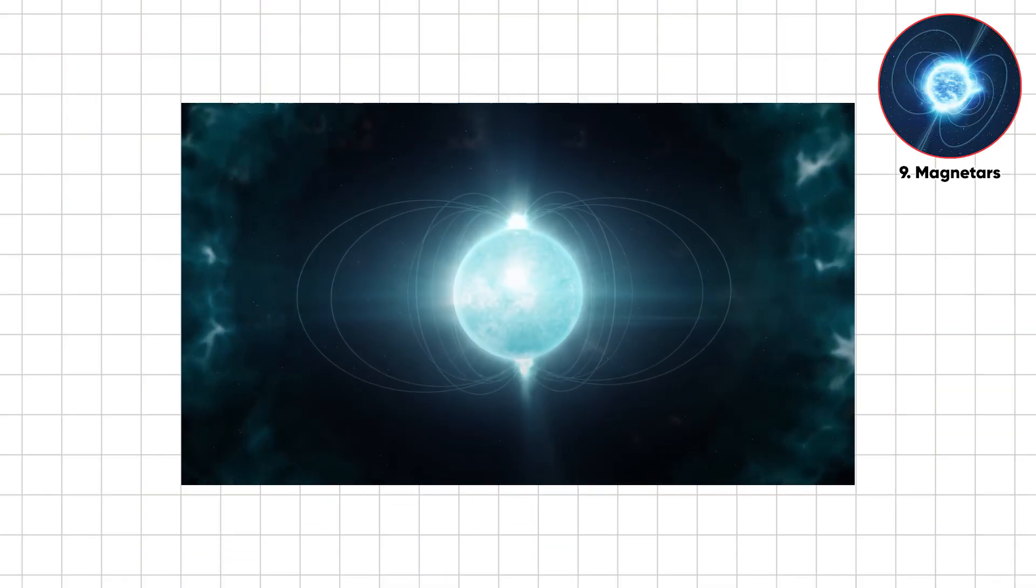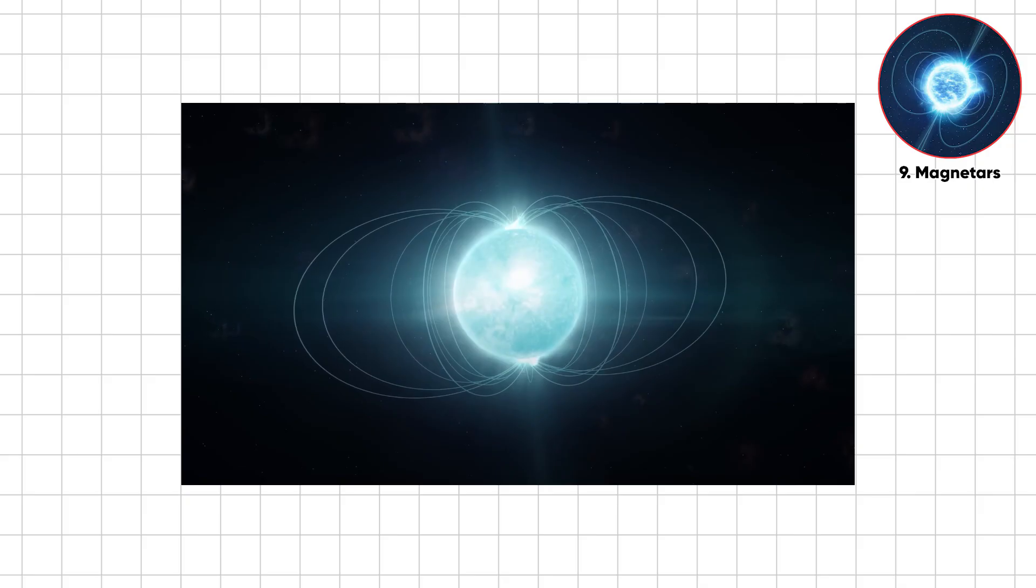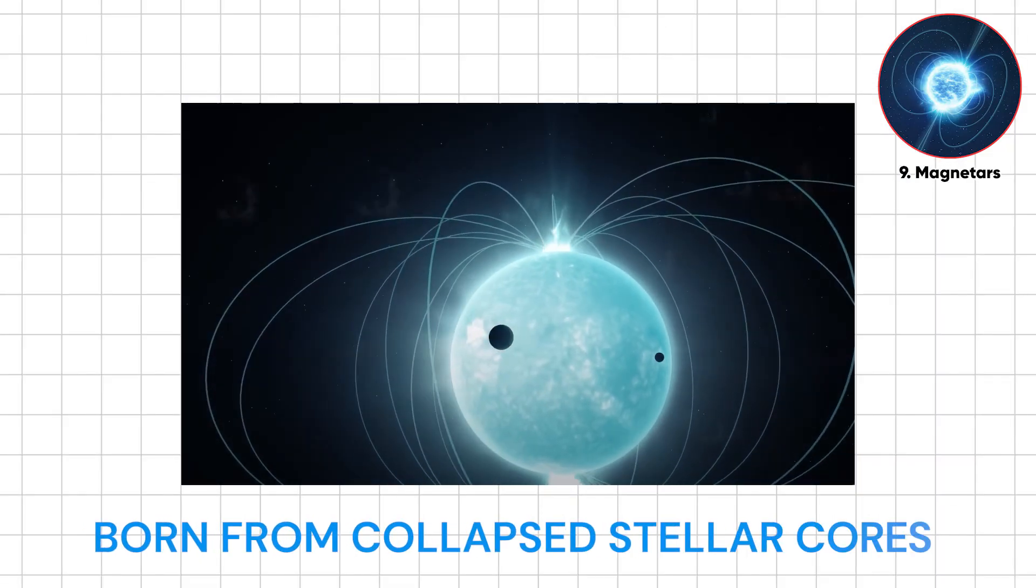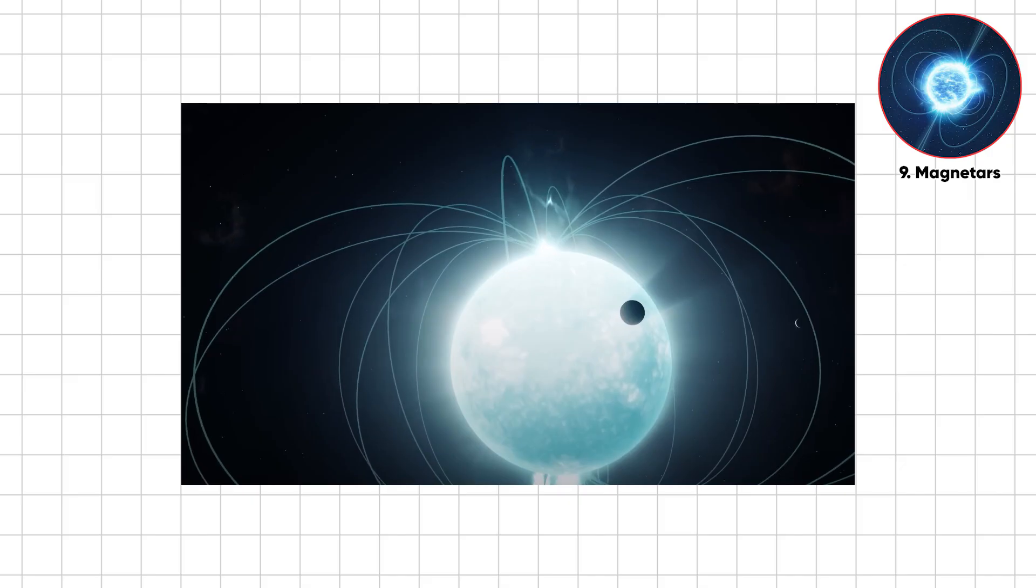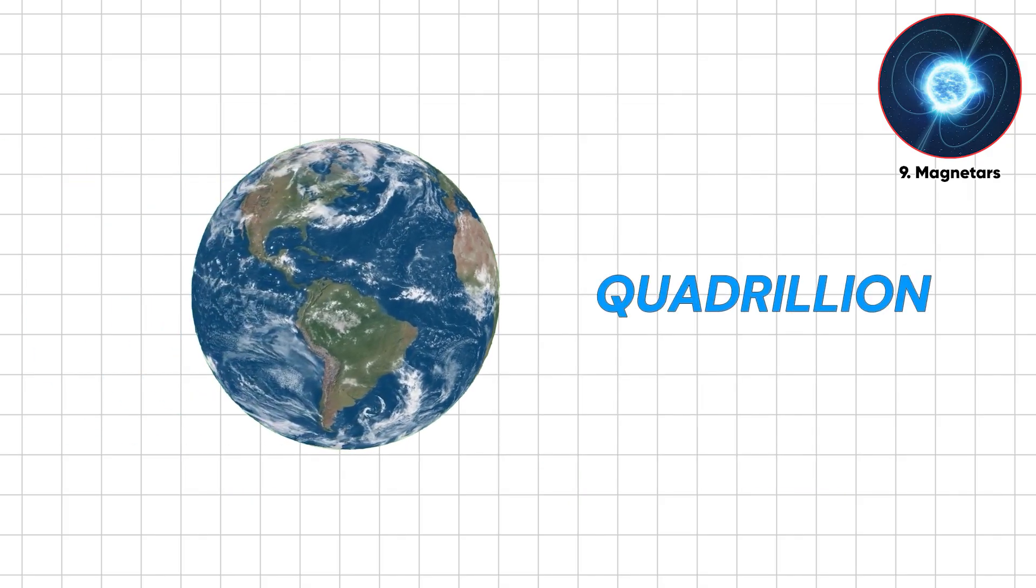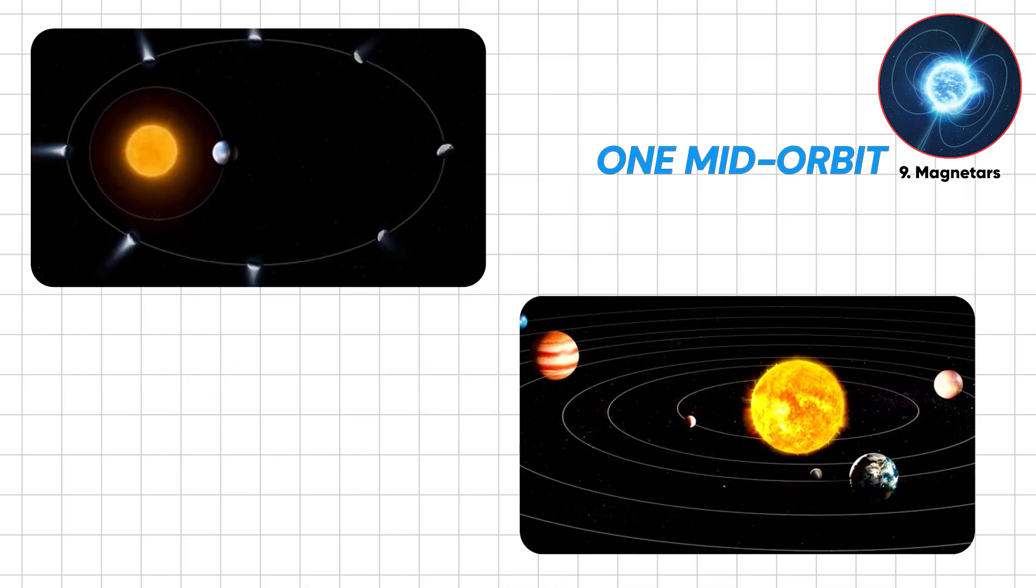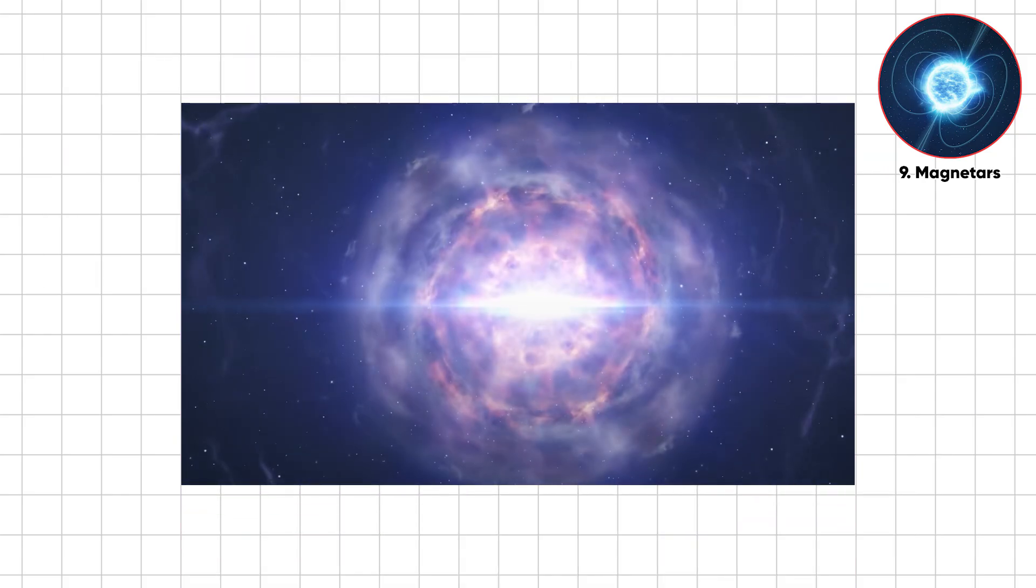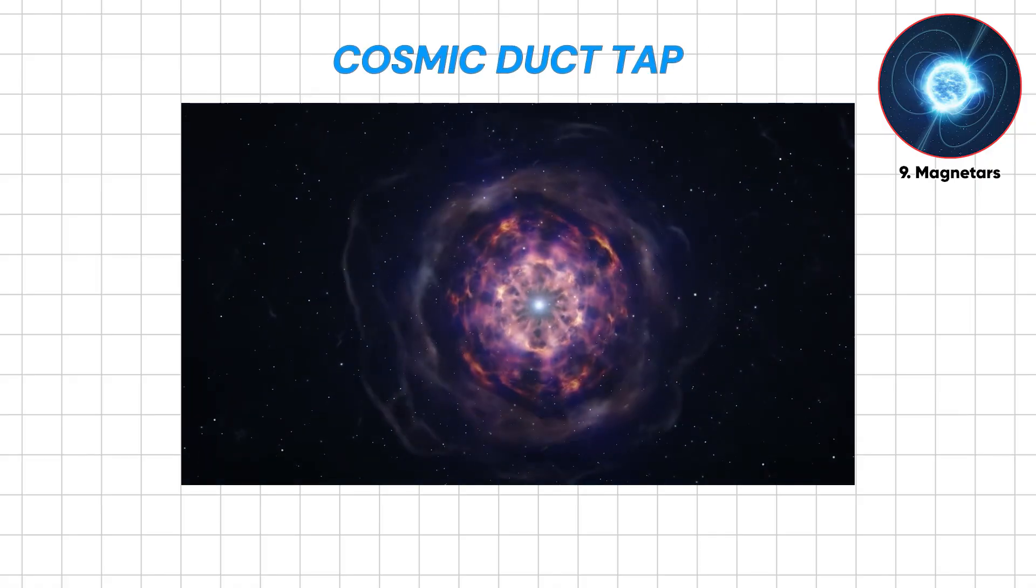Magnetars are neutron stars turned rogue cosmic wrecking balls, born from collapsed stellar cores with magnetic fields a quadrillion times stronger than Earth's. Imagine one mid-orbit at lunar distance. Your credit cards would be toast and atomic structures would tangle into chaos like cosmic duct tape.